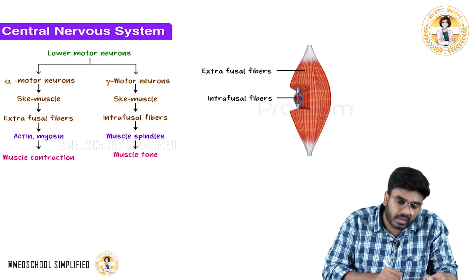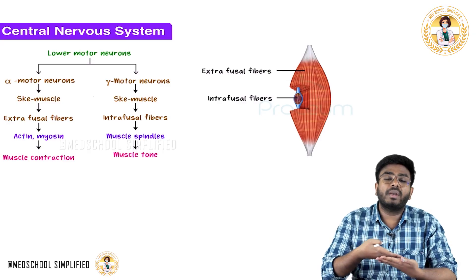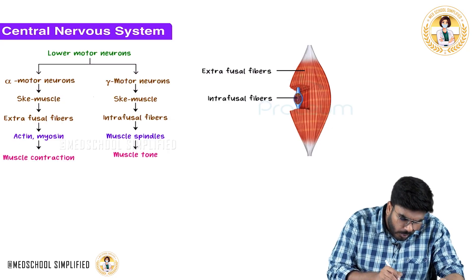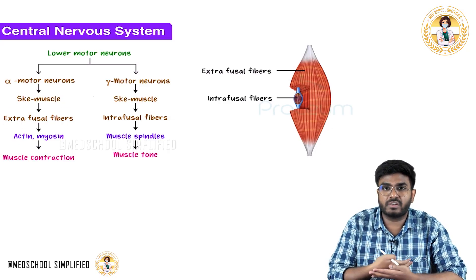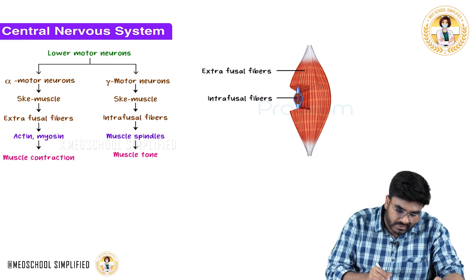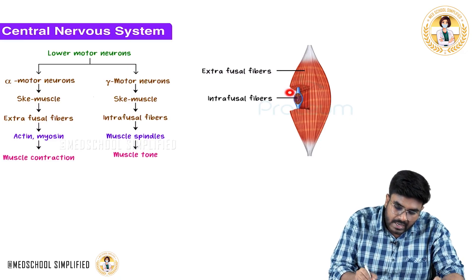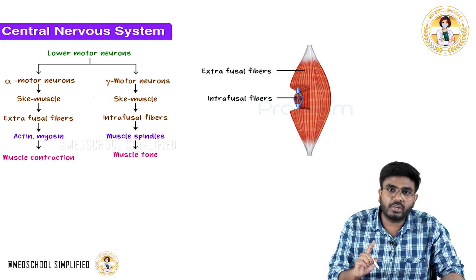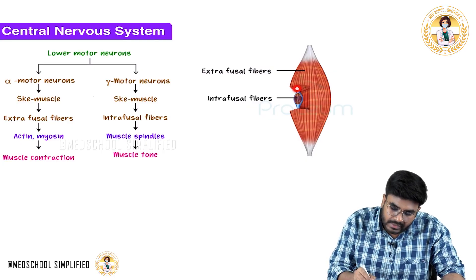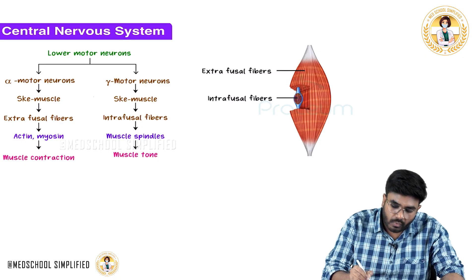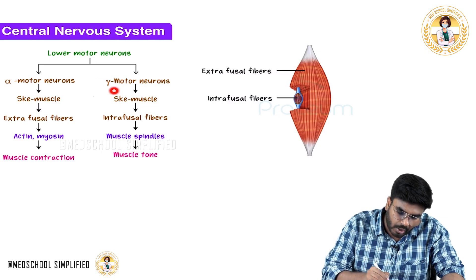Alpha motor neurons help in the contraction of actin and myosin — the sliding filament mechanism — causing muscle contraction via the extrafusal fibers. The gamma motor neurons go to the intrafusal fibers, i.e., the muscle spindles. These muscle spindles are innervated by sensory neurons as well, which we'll discuss shortly, but their motor supply comes from the gamma motor neuron. This helps in the maintenance of muscle tone.